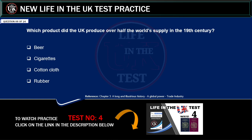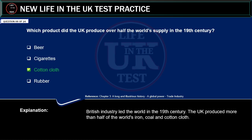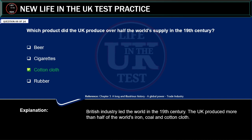Which product did the UK produce over half the world's supply of in the 19th century? Beer. Cigarettes. Cotton cloth. Rubber. Correct answer: cotton cloth. Explanation: British industry led the world in the 19th century. The UK produced more than half of the world's iron, coal and cotton cloth.